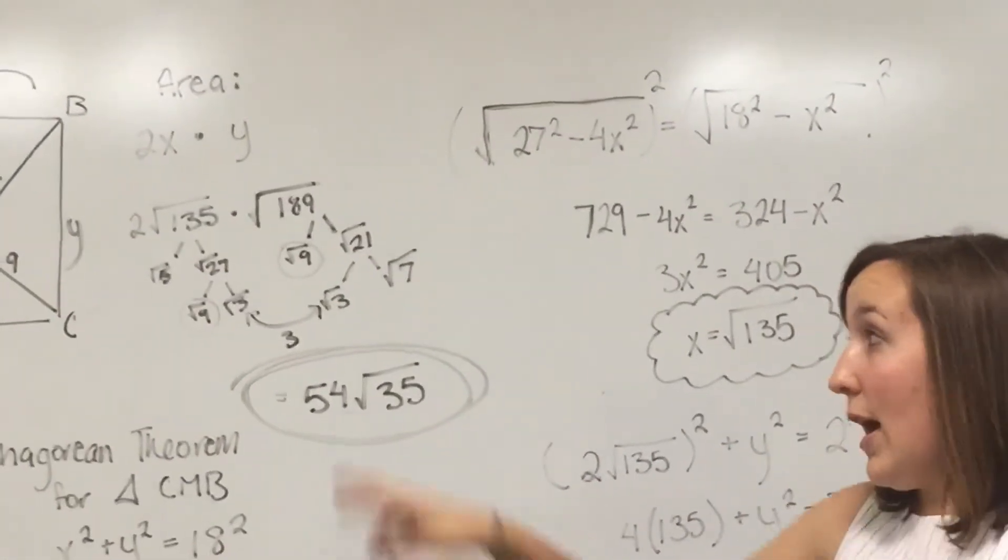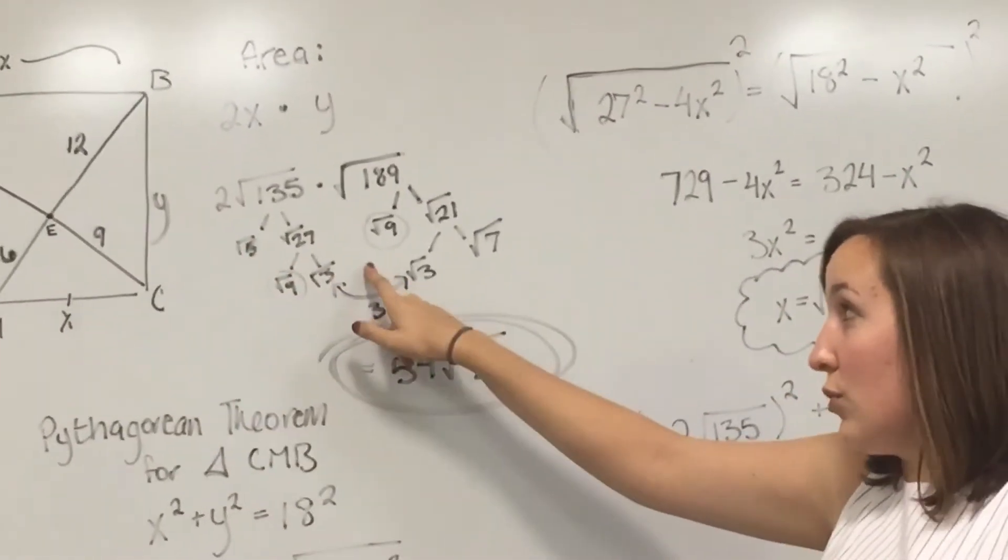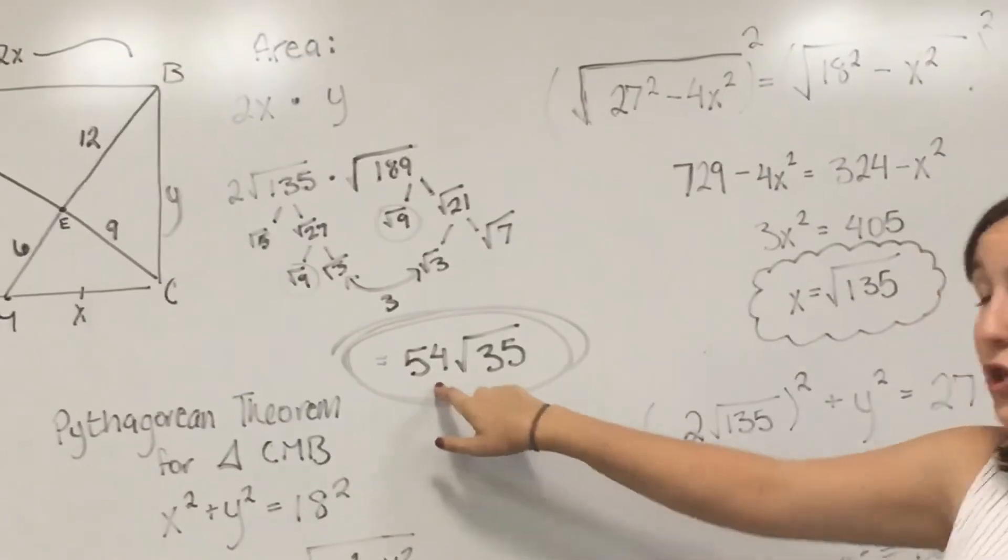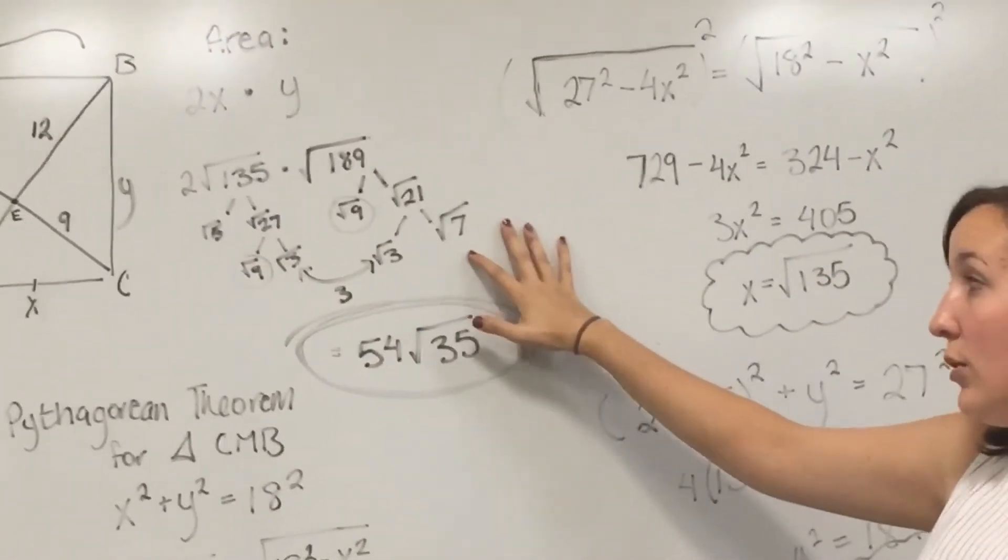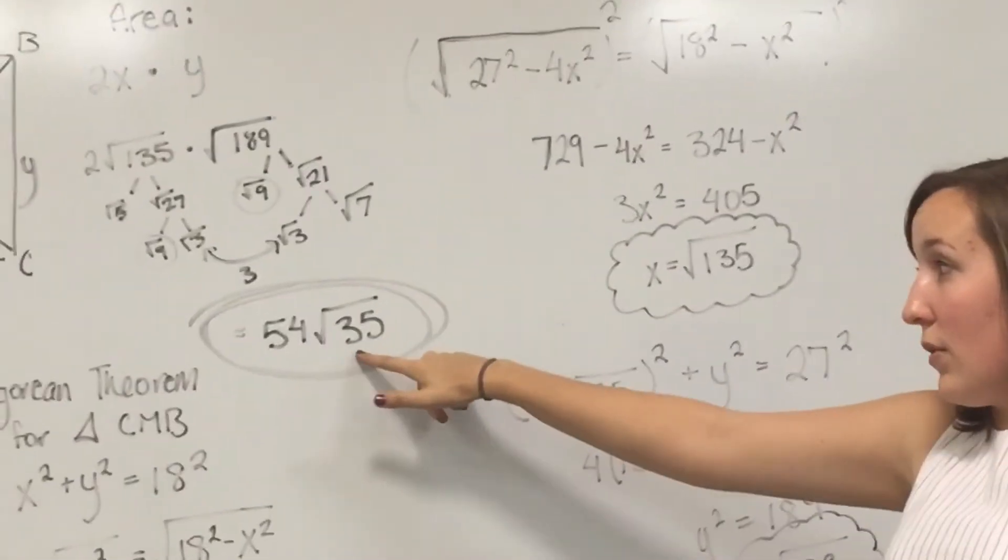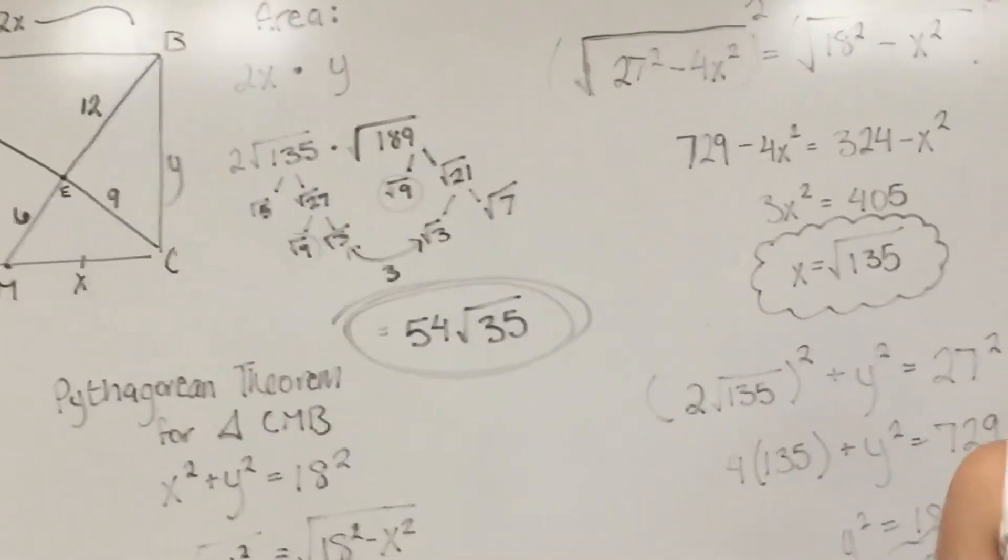So when you take 2 times coefficient 3, coefficient 3, coefficient 3, you get a coefficient of 54, and then that just leaves 5 and 7 left in there in the radicals. Multiply those together, you get 35 under the radical. So the answer is 54 times the square root of 35.